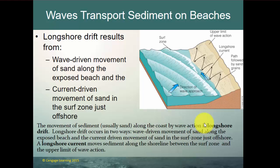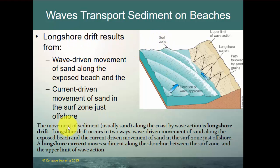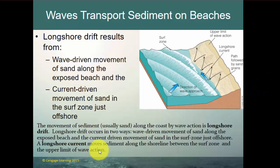Longshore drift is the wind-driven movement of sand along an exposed beach and the current-driven movement of sand in the surf zone just offshore. Waves come in at an angle, sand moves up with the water and then comes straight back down, creating this longshore drift. Longshore drift occurs in two ways: wave-driven movement of sand along the exposed beach, and current-driven movement of sand in the surf zone. The longshore current moves sediment along the shoreline between the surf zone and the upper limit of wave action.